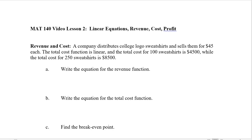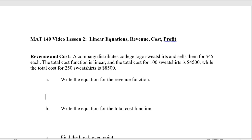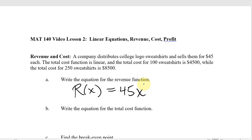Question A says: write the equation for the revenue function. The revenue function would just be R(X) = 45X, because it's $45 per sweatshirt. So each one is $45 — multiply the number of sweatshirts X by 45. We should say X is the number of sweatshirts.